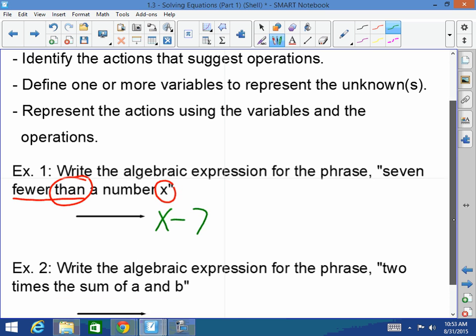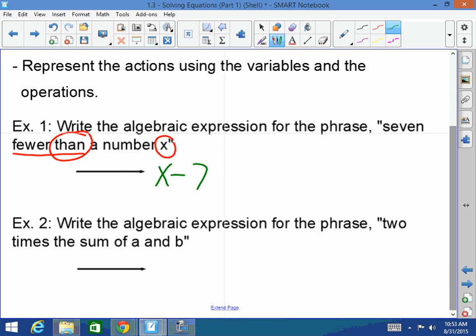Write an algebraic expression for the phrase, 2 times the sum of A and B. Very good. 2 times parentheses A plus B. Because it's telling you 2 times the sum of A and B. So you have this sum A and B in parentheses, and you're multiplying 2 to that. Does that make sense? Thank you.